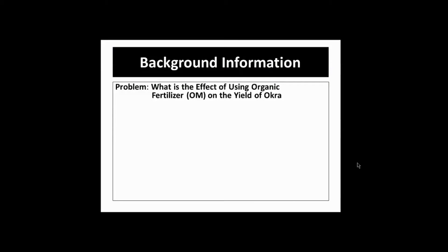Before conducting the experiment, you have to present first the problem. In this case, the problem is: what is the effect of using organic fertilizer on the yield of okra? The independent variable is using organic fertilizer, and the dependent variable is the yield of okra.